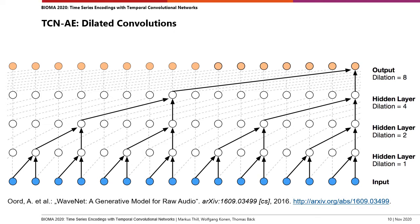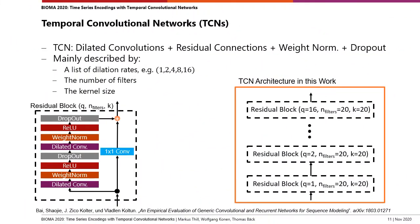A temporal convolutional network (TCN) uses these dilated convolutions in combination with residual blocks, which are stacked on top of each other to create the TCN architecture. As shown on the right side, we start with a residual block using a dilation rate of q=1, the next block uses a dilation rate of two, and so on. For all blocks we use 20 filters and a kernel size of 20.